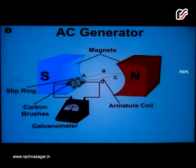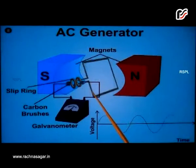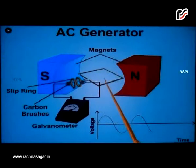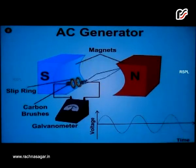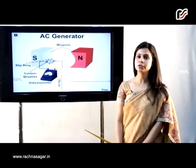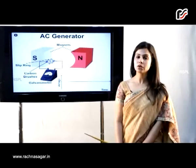As the coil moves and completes half a rotation, arm CD and arm AB exchange positions. As a result, the direction of the induced current changes from ABCD to DCBA. So after every half rotation, the direction of the current reverses. Such a current — with an alternate change in direction after every half rotation — is known as alternating current. An AC generator produces alternating current by converting the mechanical energy of the axle into electrical alternating current.